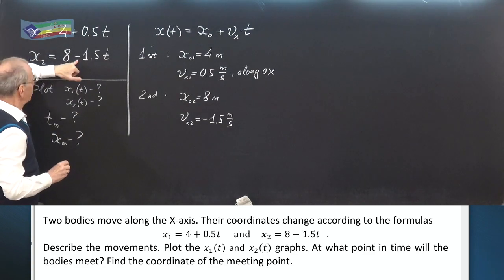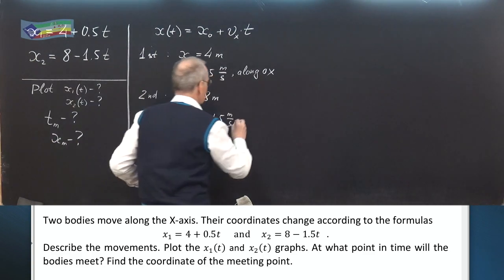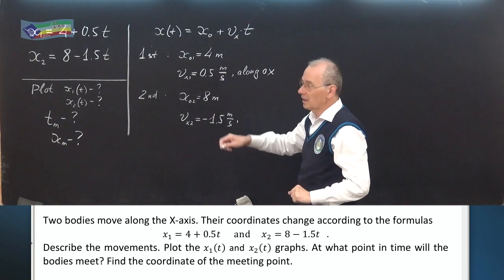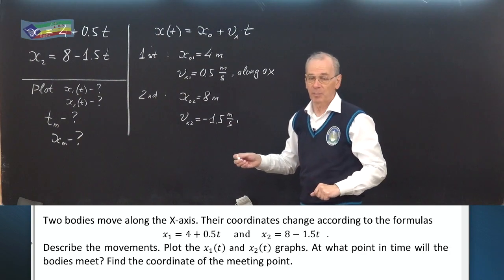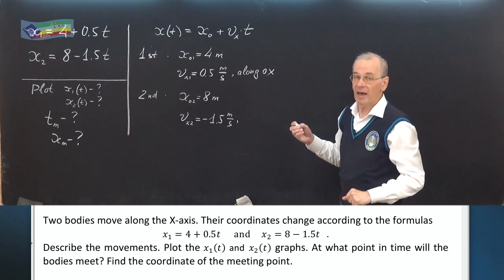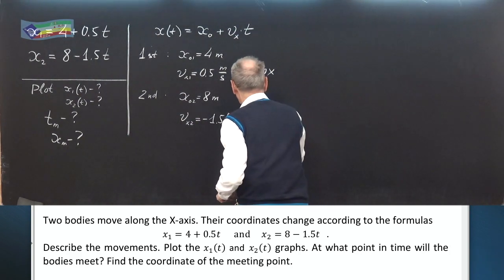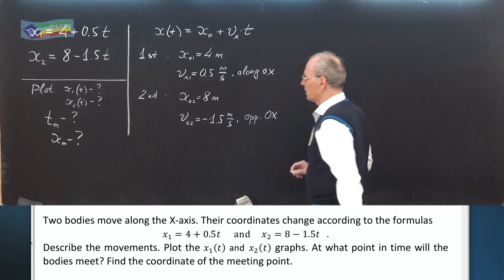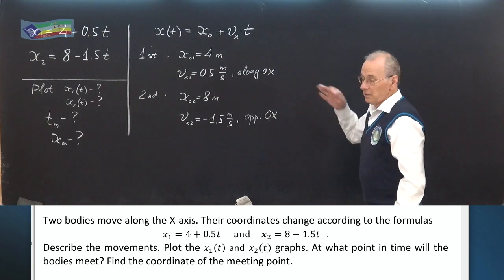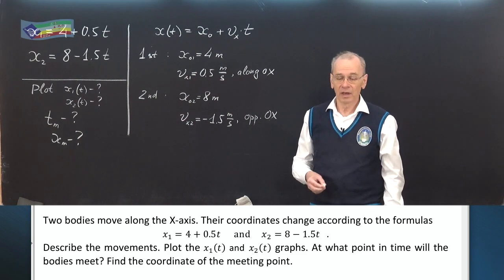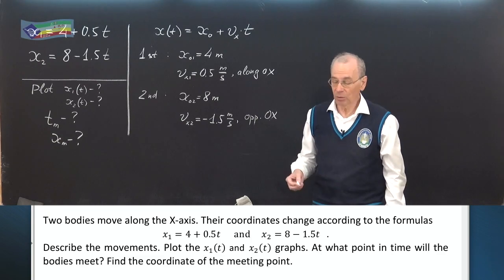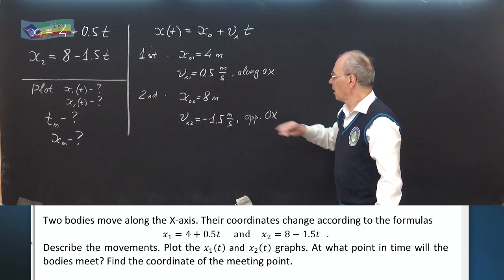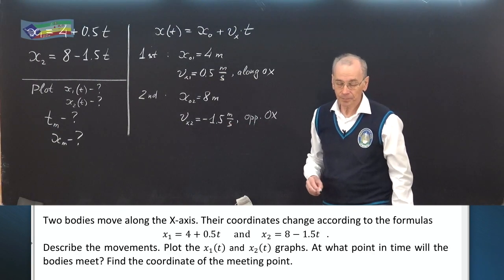Since here the minus sign, we can say this body moves in the opposite direction when compared to the direction of x axis. This is the description. Both bodies move in a straight line uniformly. The first along x axis. The second in the opposite direction. Now, let's plot graphs.